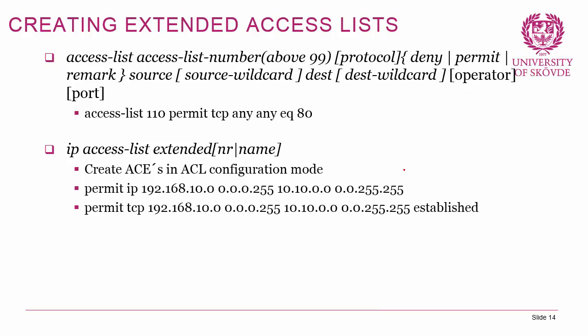Using the 'ip access-list extended' method, you enter ACL configuration mode and write your ACEs. For example: 'permit ip 192.168.10.0 0.0.0.255 10.10.0.0 0.0.255.255' permits IP traffic from the 192.168.10.0 network to the 10.10.0.0 network. Note that when using 'ip' as the protocol you cannot filter on port numbers — you need to specify TCP or UDP for that.